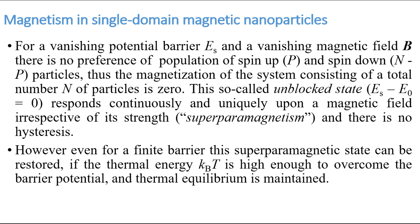Capital P particles are those oriented along the magnetic field B, and N-minus are the particles anti-parallel to B. Capital N is the total number of particles. For a managing potential barrier and no magnetic field, there is no preference of population for spin-up and spin-down, so magnetization will be zero — this is called the unblocked state or superparamagnetic state.